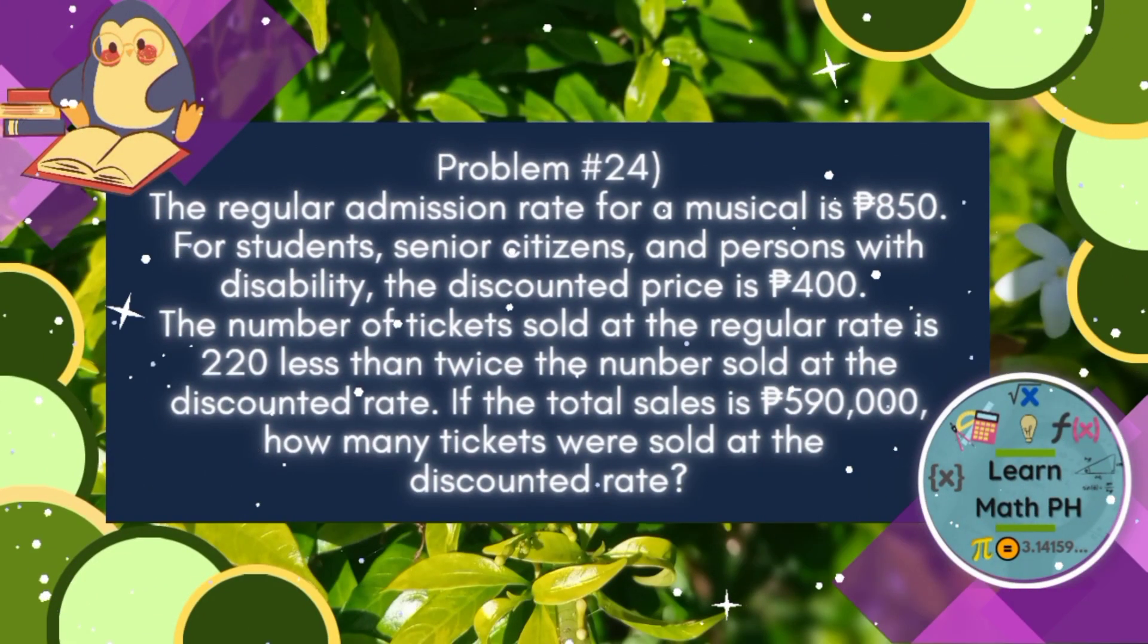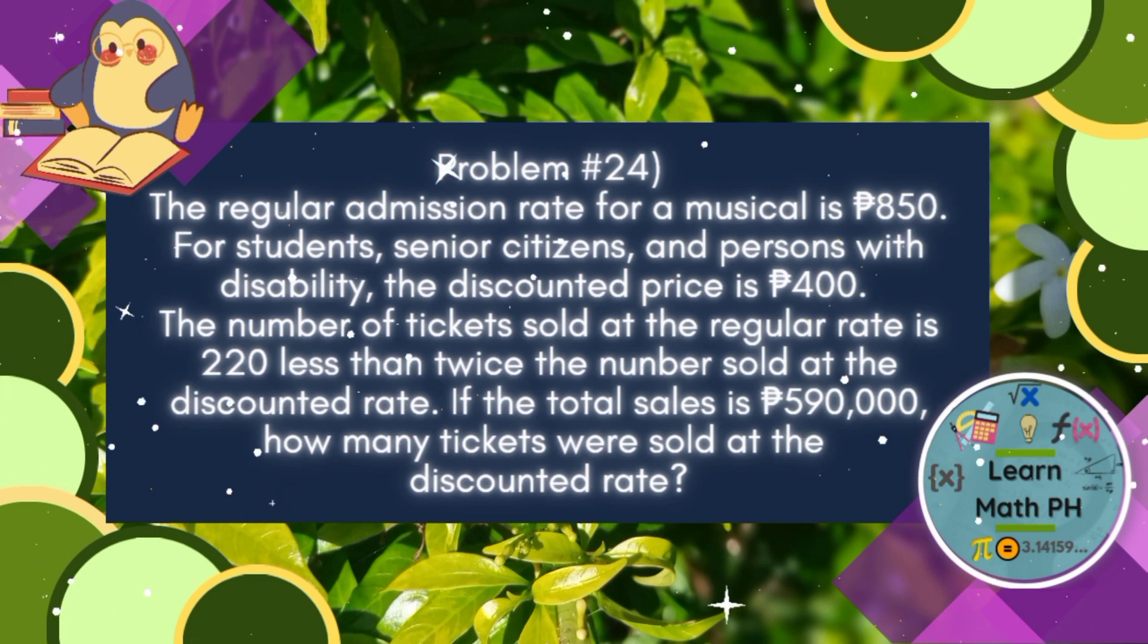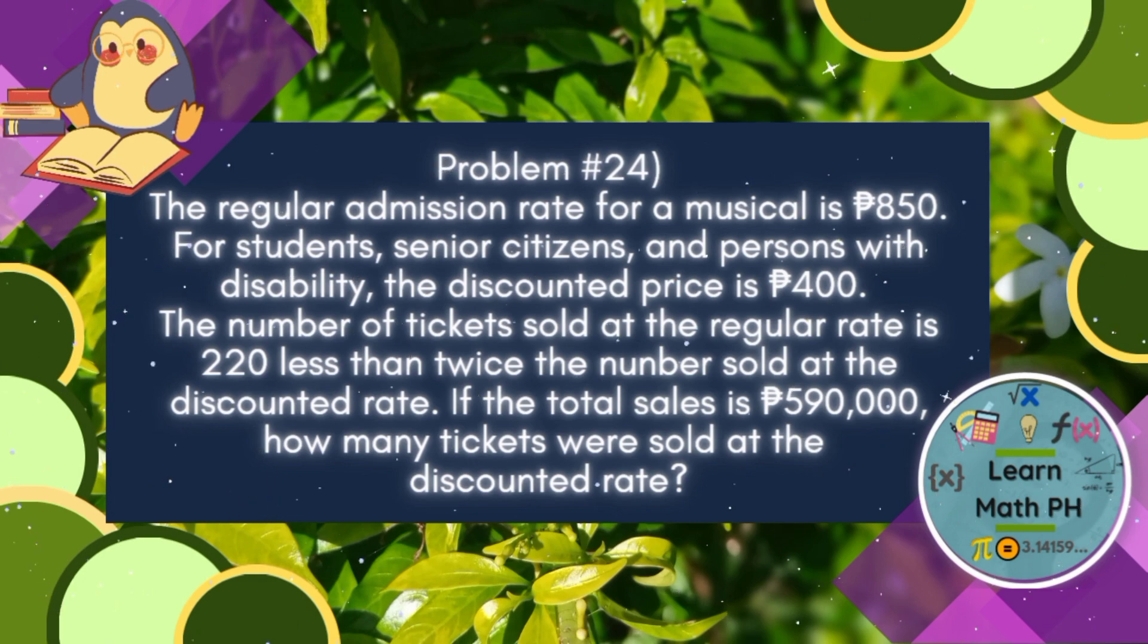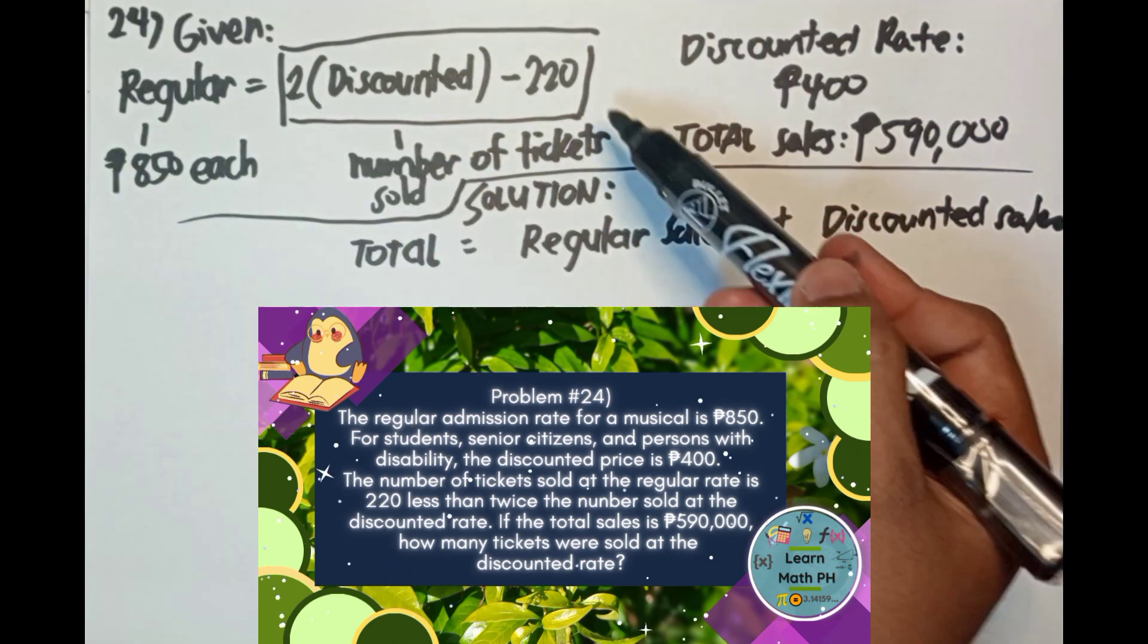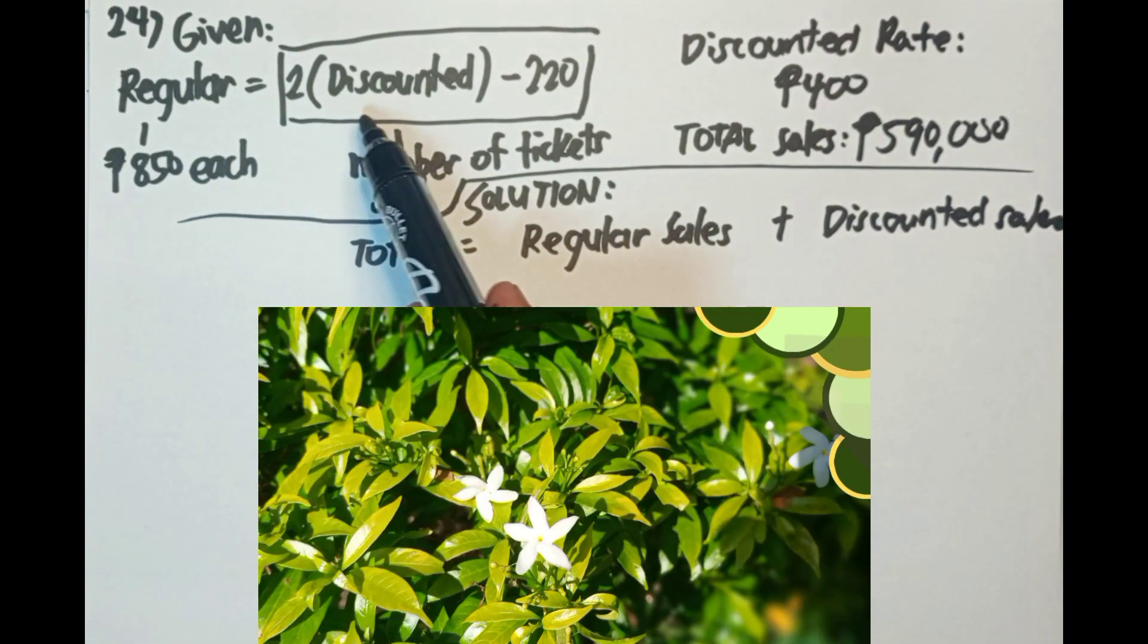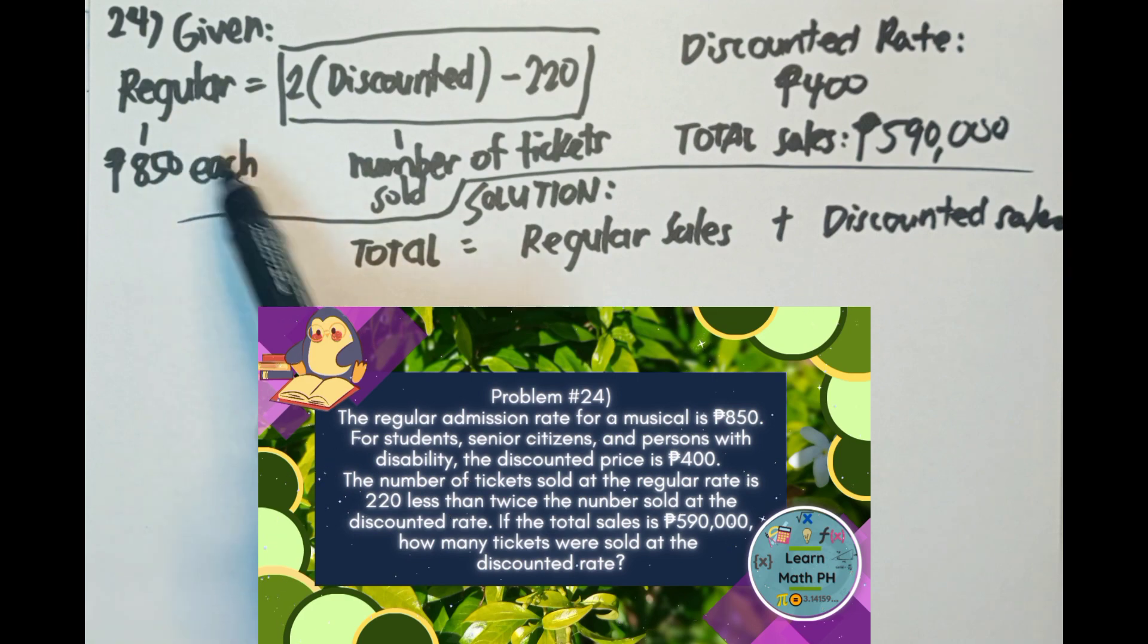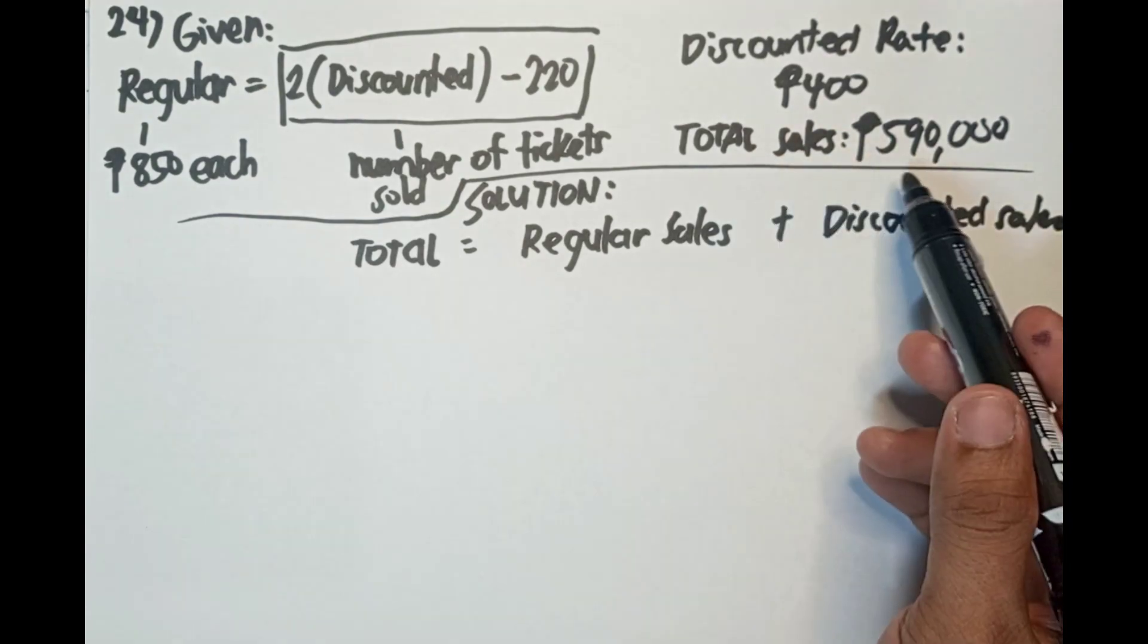Next problem please. Ito na tayo sa number 24. The regular admission rate for a musical is 850 pesos. For students, senior citizens, persons with disability, the discounted price is 400 pesos. The number of tickets sold at the regular rate is 220 less than twice the number sold at the discounted rate. If the total sales is 590,000 pesos, how many tickets were sold at the discounted rate? Meron tayong mga given dito guys. Ang given dito is ang regular, ito is 220 less than twice the number sold at discounted rate. So regular equals 2 times discounted rate minus 220. Ito yung number of tickets na nabenta. Tapos bawat ticket nito ay 850 pesos. Ang discounted rate naman ay 400 pesos.